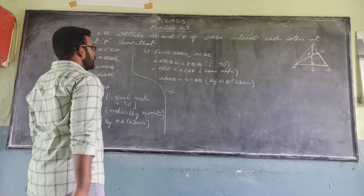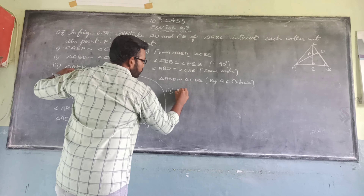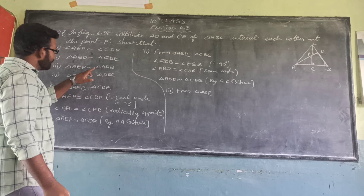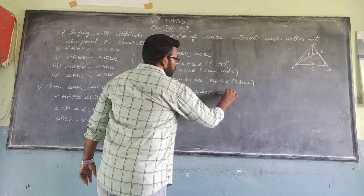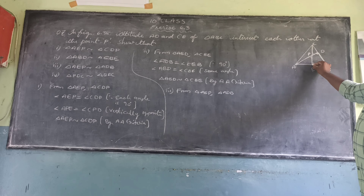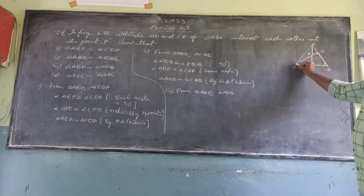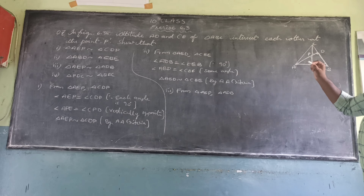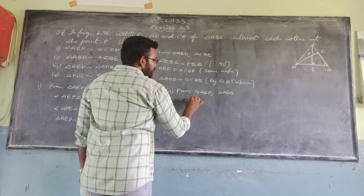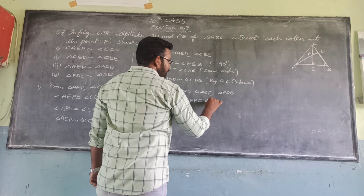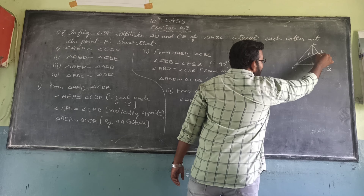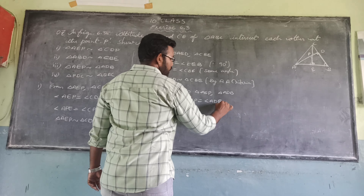For the third part, from triangles AEP and triangle ADB. Angle AEP is equal to angle ADB because angle AEP is 90 degrees and angle ADB is also 90 degrees. So each angle is 90 degrees.